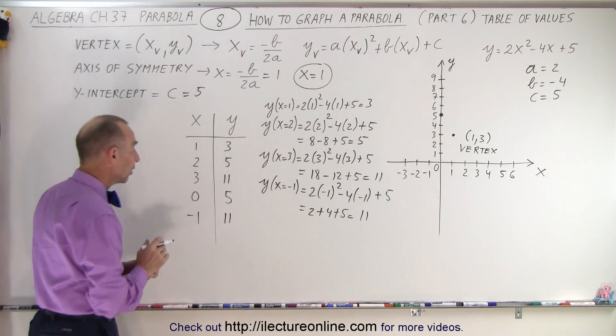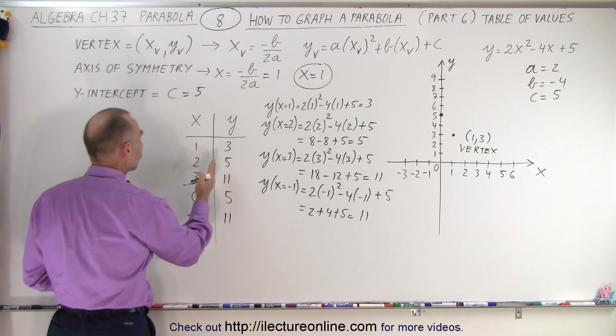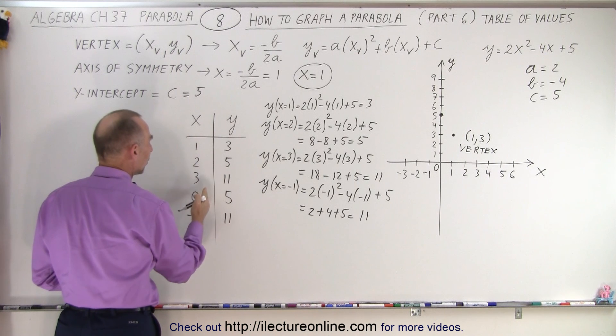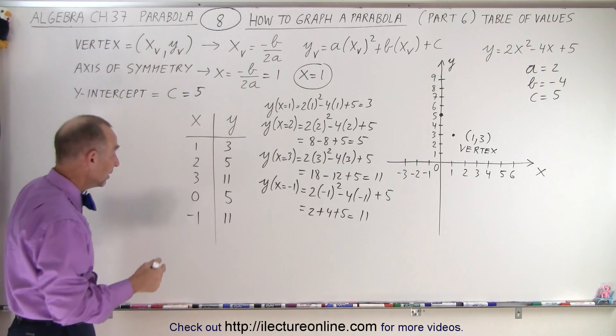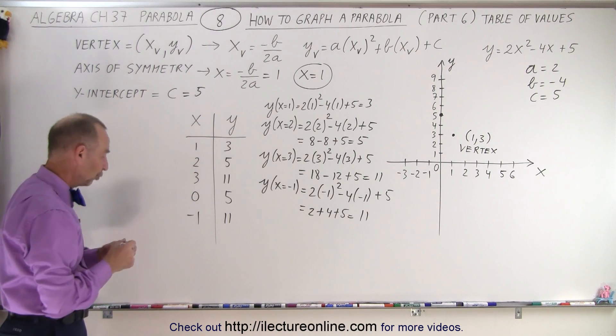Well, we kind of knew that because we have that axis of symmetry. So we go one unit to the right, we get 5. We go two units to the right, we get 11. We go one unit to the left, we get 5. We go two units to the left, we get 11. There should be perfect symmetry there. But if we didn't know that, that's quite okay. We will find out soon enough.